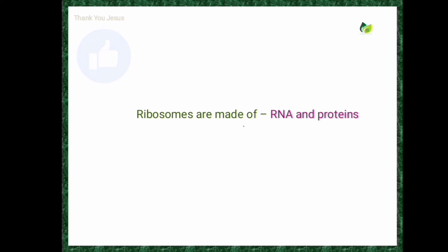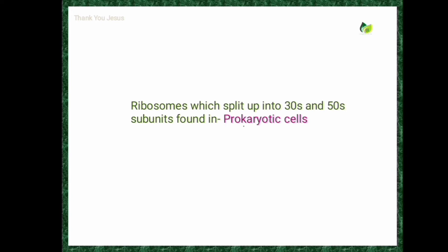Ribosomes are made up of RNA and proteins, that's why they are called ribonucleoprotein particles. Ribosomes which split up into 30S and 50S subunits are found in prokaryotic cells — these are the 70S type of ribosomes present only in prokaryotes.